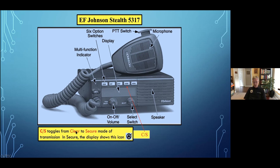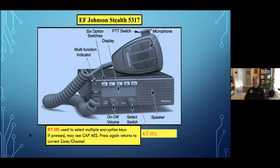The clear/secure button only works one way — you push it, it says secure; push it again, it says clear. We stay in clear. If it's in secure, you're going to see a little icon at the top of the window, and you only do that if some outside activity has asked you to go secure. Key select has various multiple encryption keys in it — the best thing is to just turn it off so you can get back to the zone and channel you're working on.